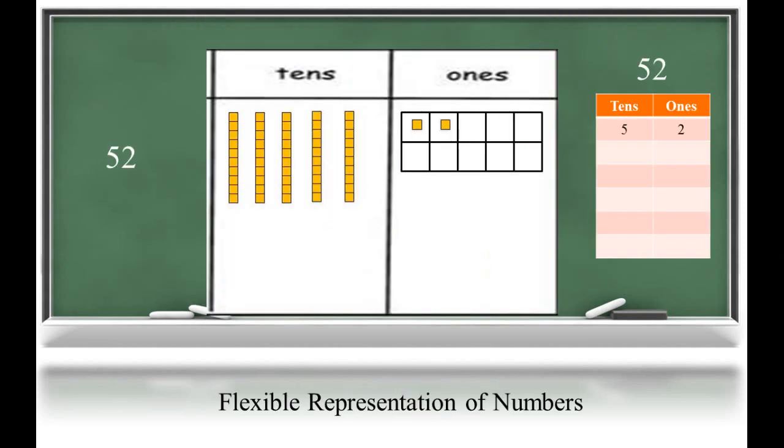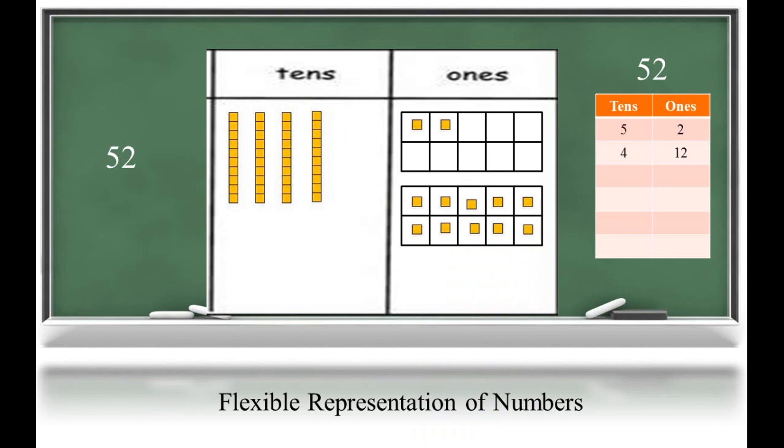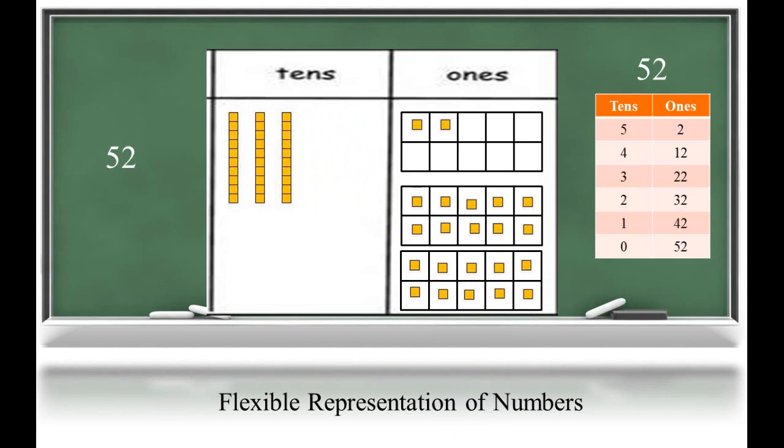To push learning to a deeper level, instruction focuses on flexible representations of the same value. For example, when asked to represent the number 52, we generally would do so with 5 tens and 2 ones. But we could regroup a 10 for 10 ones, changing the representation to 4 tens and 12 ones, to represent that same value of 52. 52 also could be represented with 3 tens and 22 ones. In some tasks, students will be required to find all possible combinations to represent one given value.